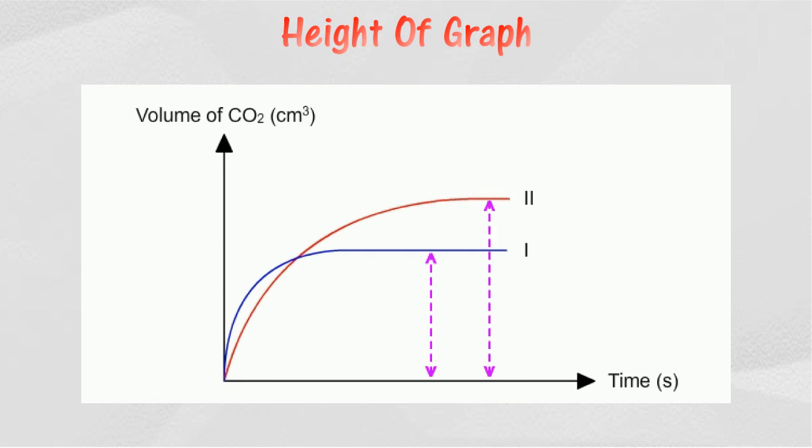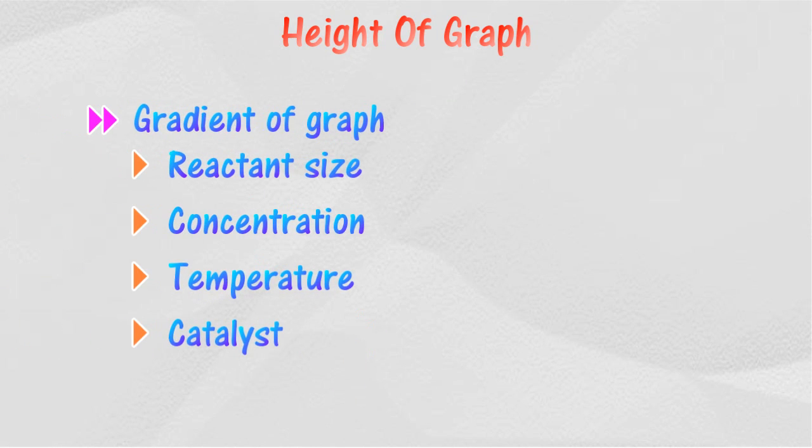The gradient of a graph is determined by four factors: the size of the reactant, the concentration of the reactant, temperature, or the use of a catalyst.